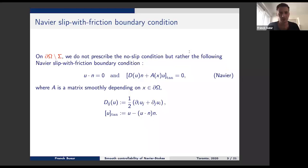What is important here is that it's a condition where first-order derivatives are involved, rather than the no-slip condition which is just about u. Remember, that's a boundary condition which is given — it's homogeneous, equal to zero. You can choose what happens on the other part of the boundary, but this Navier slip-lift friction has no source term; those are given.